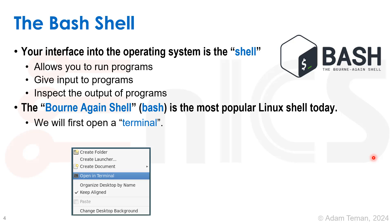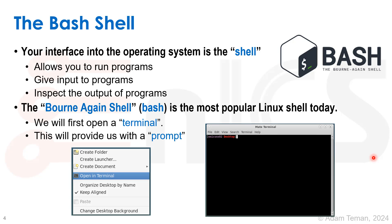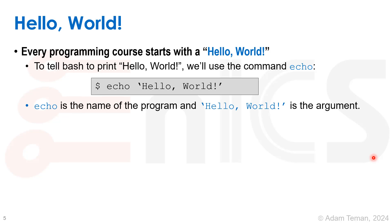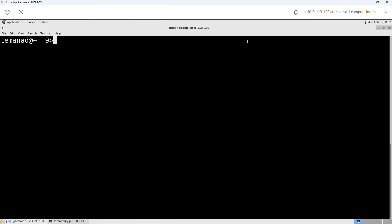First we open a terminal, usually by right-clicking on your desktop environment and selecting 'Open in Terminal.' That will give us a prompt. Every programming course has to start with a hello world — we'll tell bash to print it using the command echo. We write echo and give it the argument 'hello world' in quotations. Echo is just the name of a program and hello world is the argument. Here at the command prompt I write echo 'hello world!' and as we can see, it returns: Hello world.